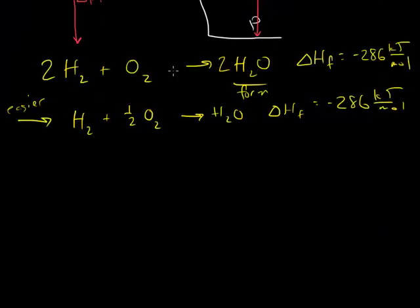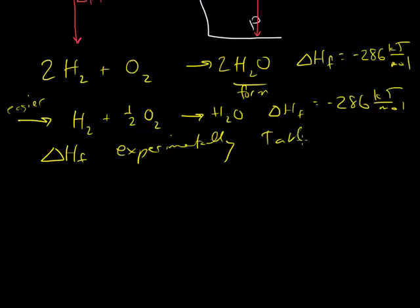When you're looking at heat of formation data, when you have heat of formation data, this data is usually found experimentally. And you can look this up on a table. It's called a heat of formation table, standard heat of formation table.